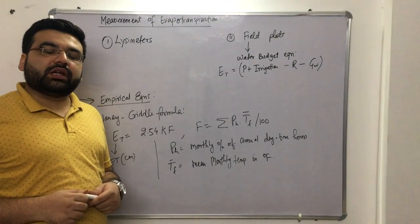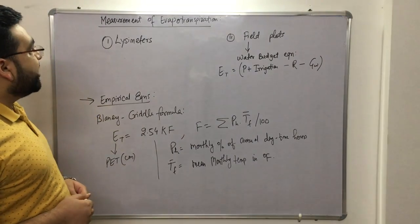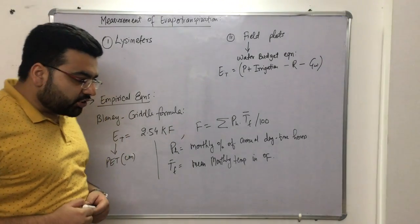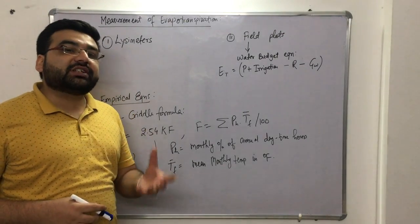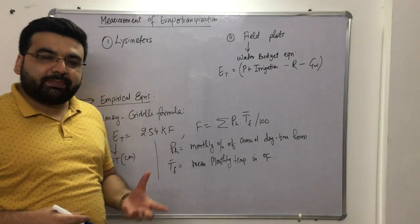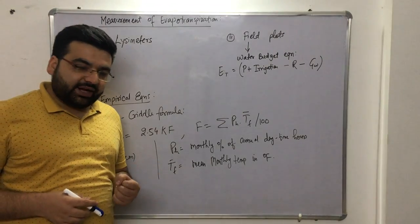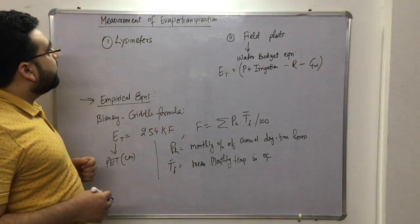Subject: Hydrology, Chapter: Evaporation, Topic: Measurement of Evapotranspiration. Students, we have already discussed what evapotranspiration is, how it happens, what PET and AET are, and what the edited index is. Now in this lecture we'll be discussing the measurement of evapotranspiration.